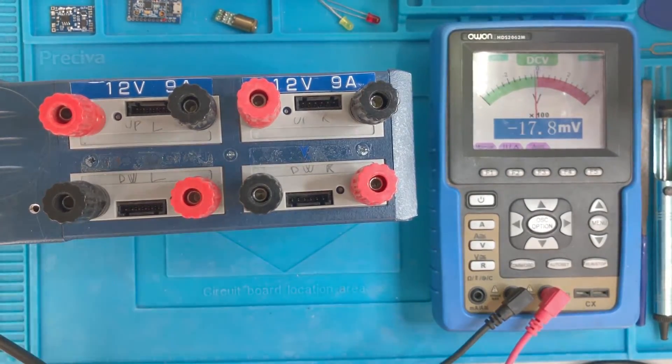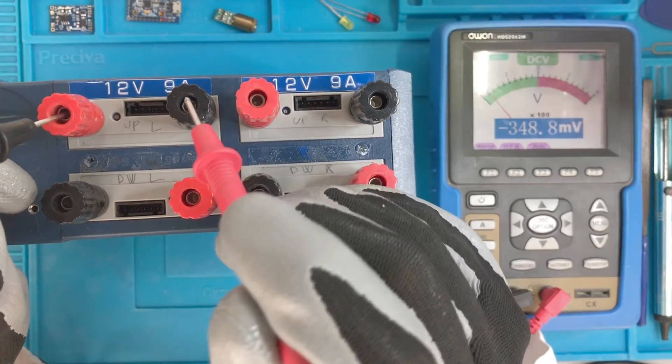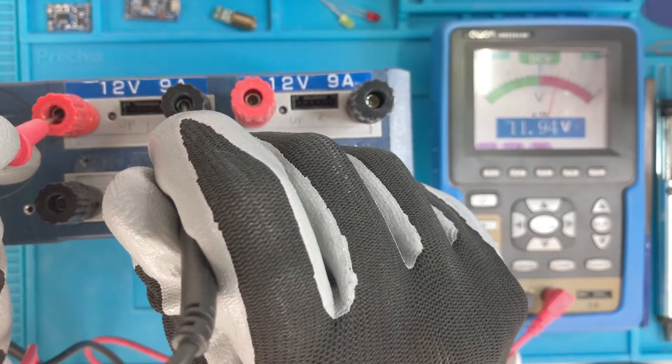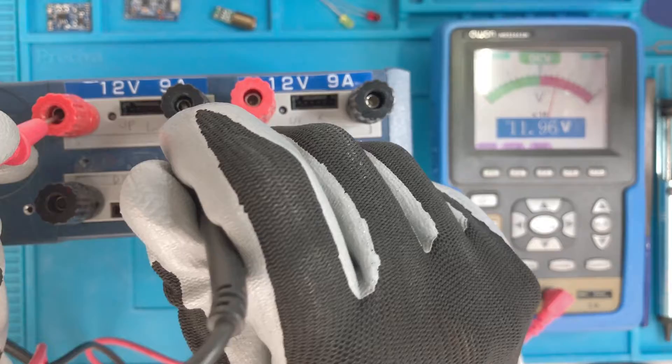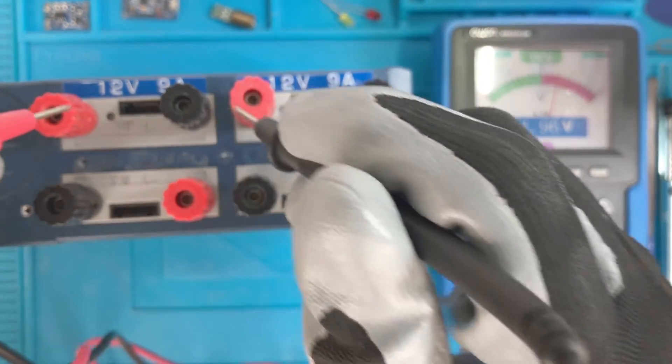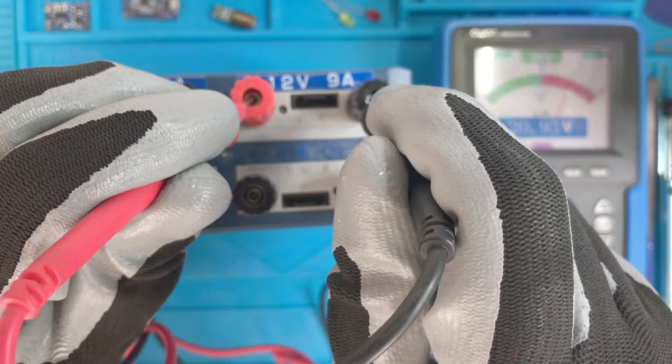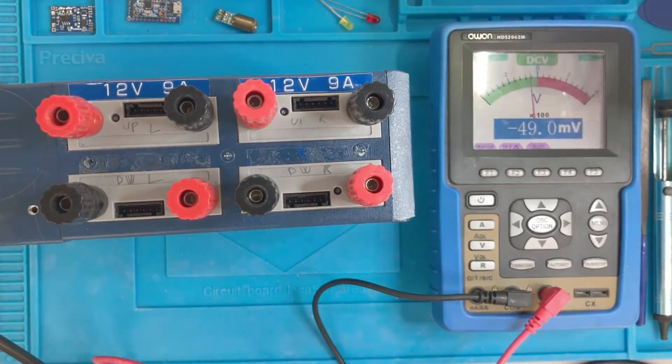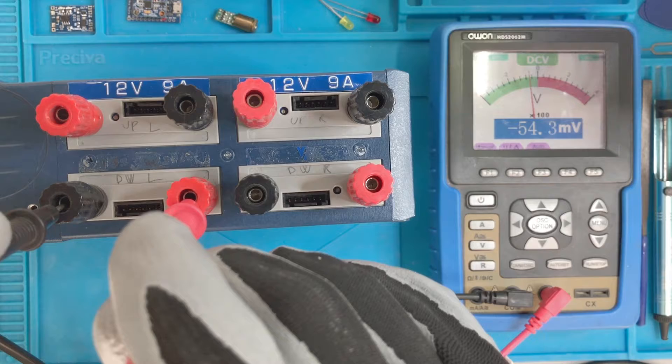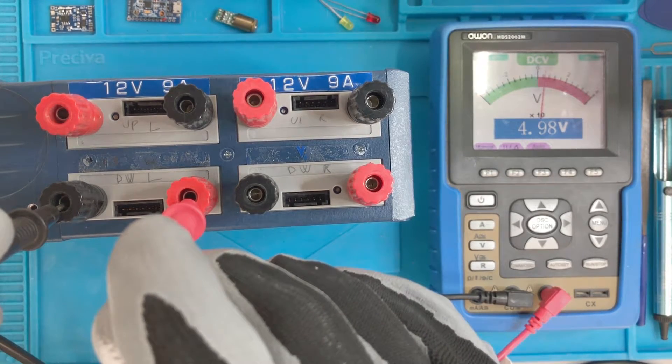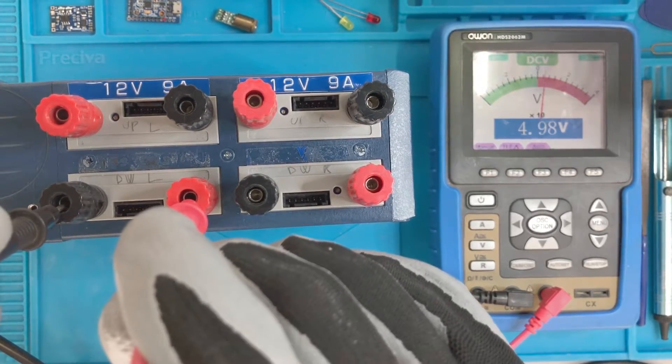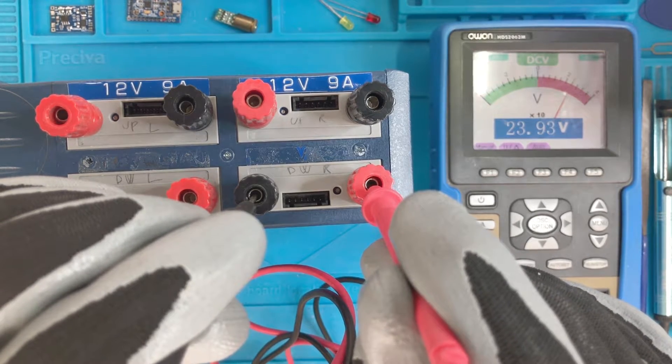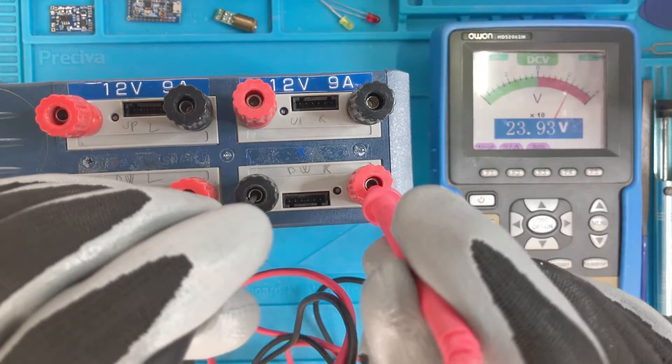Okay, this should be 12 volts. 11.96, which is good. This one is 11.96 and this is the correct polarity. So this one is 5 volts, 4.98 volts. And this one is 24, so 23.93 volts.